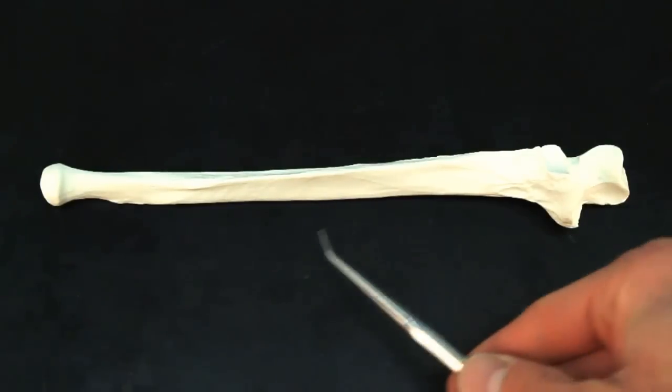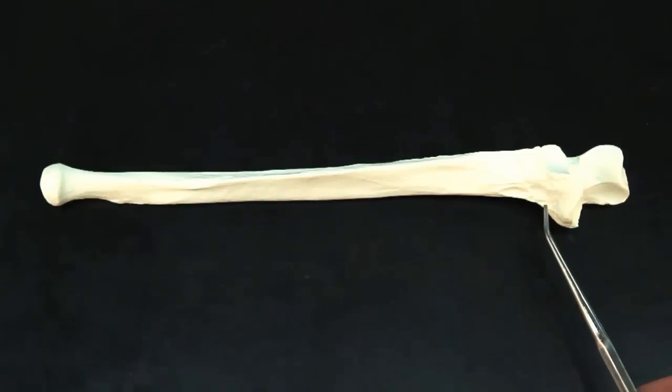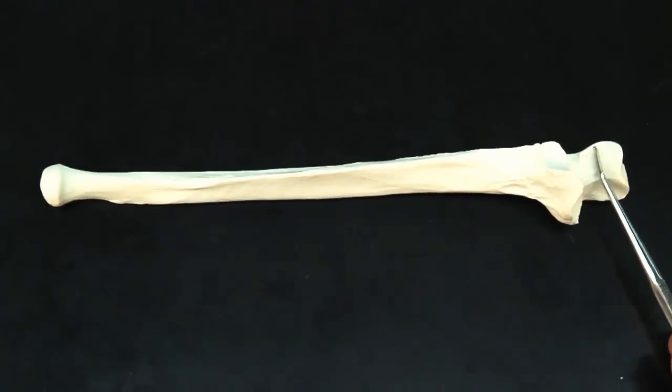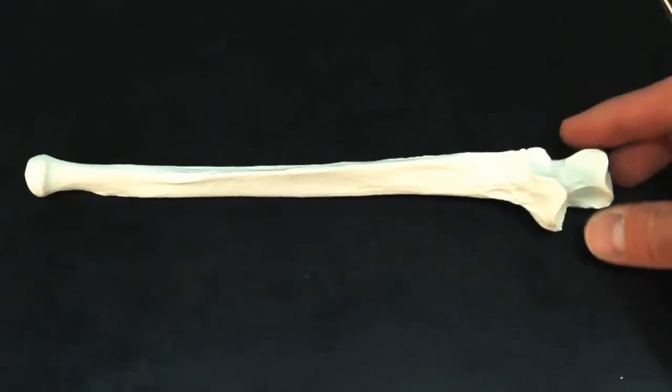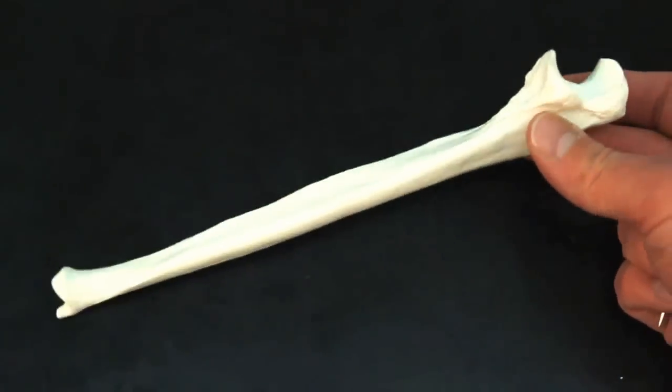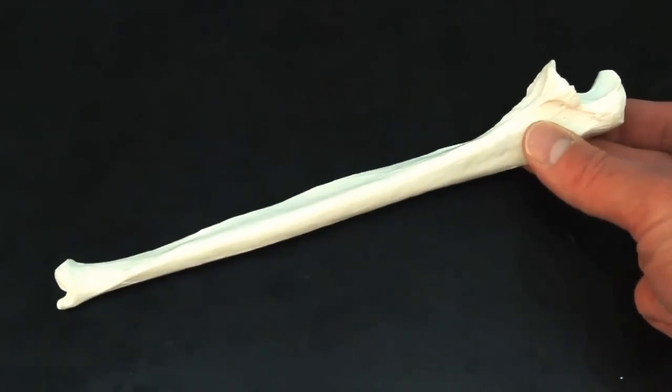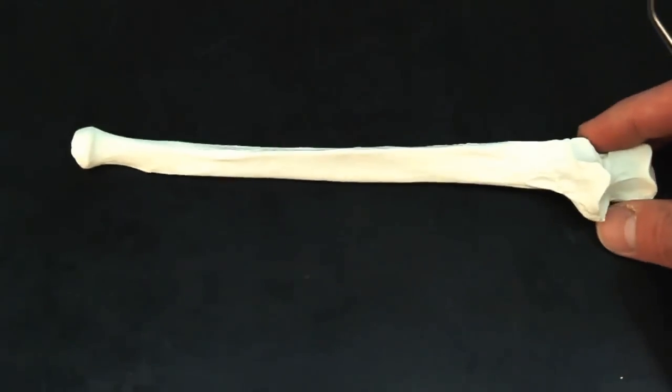This bone is the ulna. One of the giveaways how you can know it's the ulna is the U shape on the proximal end. So we turn that, you can see how it looks like a U. There's U shape on the proximal end.